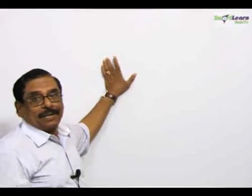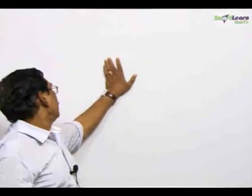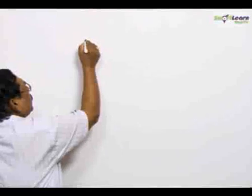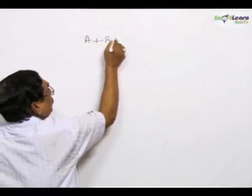Now, one or two more concepts I will deal with using these identities, namely if A, B, C are the angles of a triangle, I start with that again.